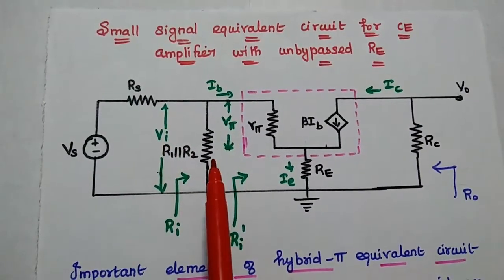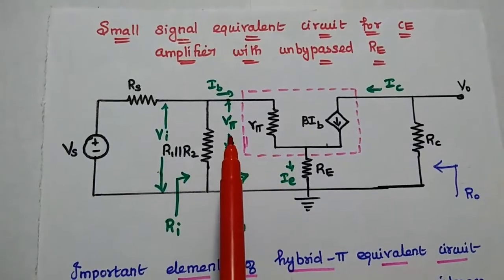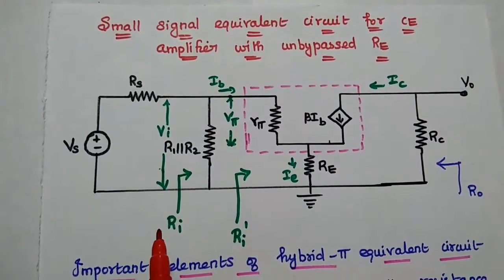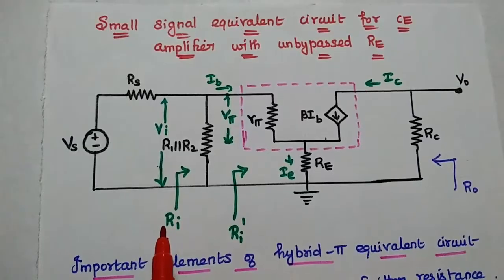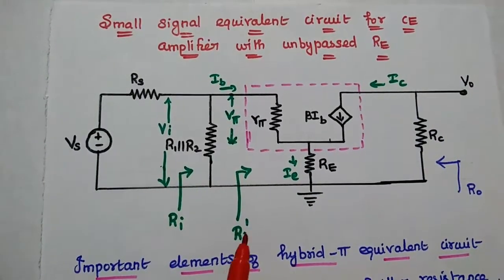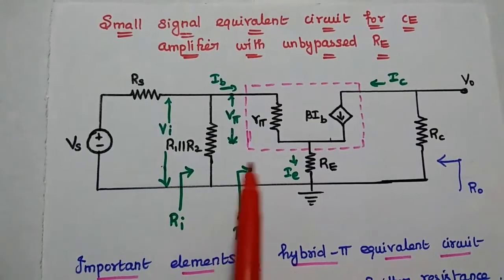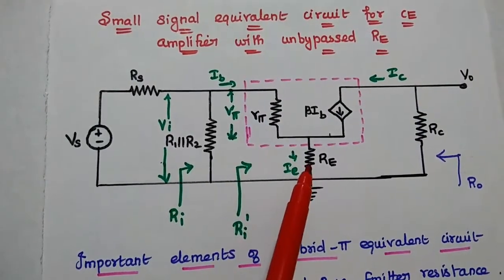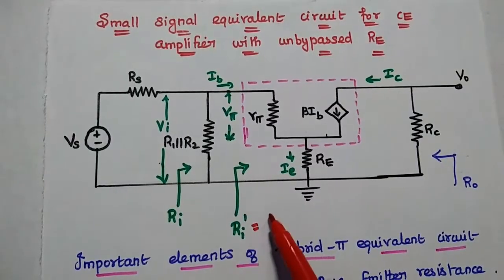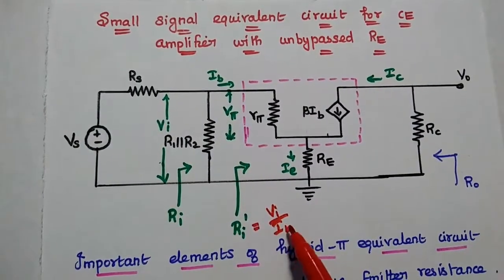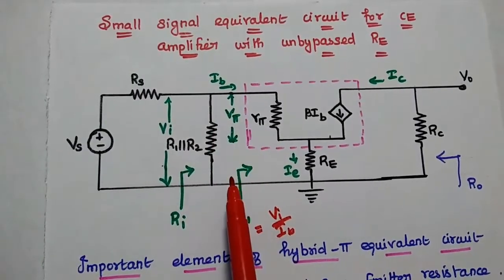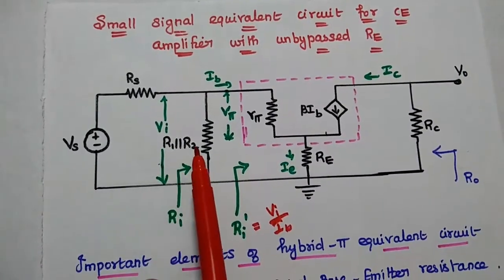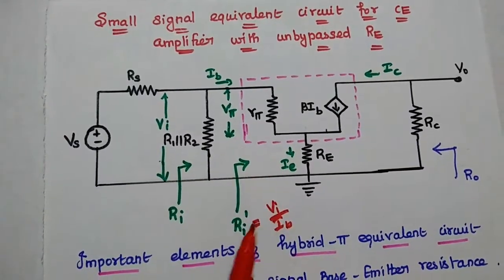Vi represents the input voltage between base and emitter. Vpi is the voltage across Rpi. We can take the output across Rc. The input resistance of the amplifier is represented as Ri — that is the overall input resistance. This Ri' represents the subdivision of input resistance between these two points; it includes Rpi and Re, and can be obtained using the formula Vi divided by Ib. So Ri' is nothing but Vi divided by Ib. This Ri is nothing but R1 parallel with R2 in parallel with Ri'.